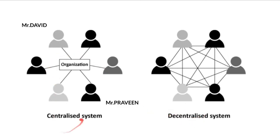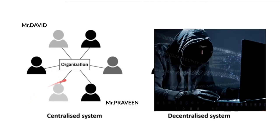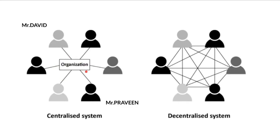Let's see the difference between centralized and decentralized transactions. For example, in a centralized transaction, Mr. David would like to transfer $100 to Mr. Praveen. So he does the online transaction — from his bank account the amount is deducted and added to Mr. Praveen's account. The transaction is managed at a single place, which makes it faster, but the disadvantage is that a hacker only needs to hack at that single place.